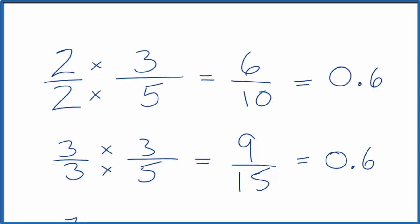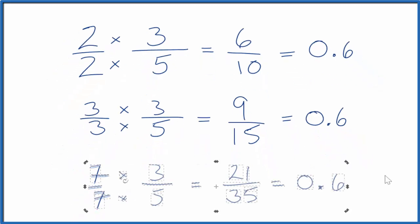One more. Let's do 7 over 7. Again, since 7 over 7 is 1, we haven't changed the actual value. It's still 0.6, but we have an equivalent fraction for 3 fifths.